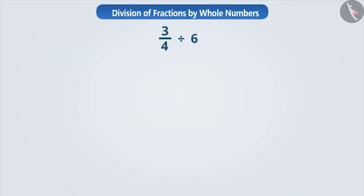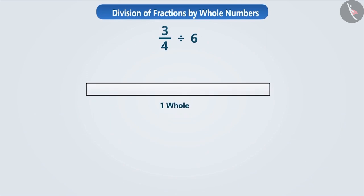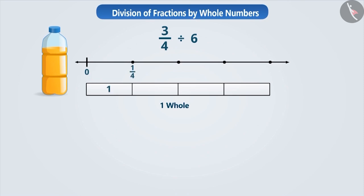Suppose we consider this strip to be a whole number. The bottle contains three-fourth litre juice. To represent it, we will make four equal parts of the strip. On the number line, the first part will be expressed as one by four, the second as two by four, the third as three by four, and the fourth as four by four, that is one. Three of these four parts are taken, so we will shade the three parts. These three shaded parts express the fraction three by four.